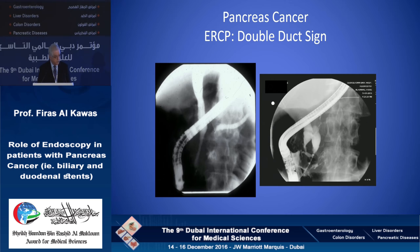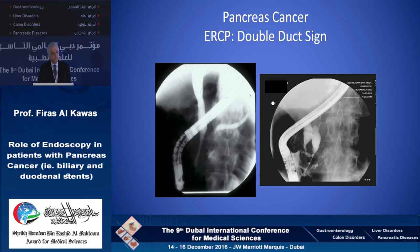This is what we see during ERCP, which is the double duct sign. These patients usually have tumors of the head of the pancreas. The majority will obviously require biliary drainage, and in some of them there is also a role for pancreatic stenting.